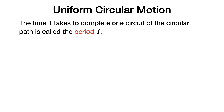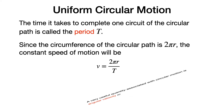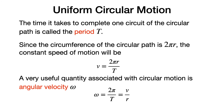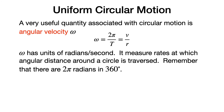The time it takes to complete one circuit of the circular path is called the period T. Since the circumference of a circular path is 2π times the radius, the constant speed must be 2πr divided by the period T. A very useful quantity associated with periodic motion is the angular velocity, defined as 2π divided by the period, which equals v over r. Omega has units of radians per second.